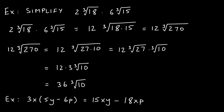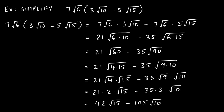Now think back to polynomials. If asked to distribute 3x into (5y − 6p), you multiply coefficients together: 3 × 5 = 15xy and 3 × −6 = −18xp. We did this way back with polynomials. Well, if we can do it with polynomials, we have to be able to do it with radicals too — distribution works regardless of whether we're dealing with polynomials or radicals.